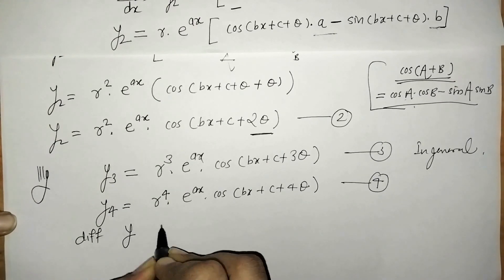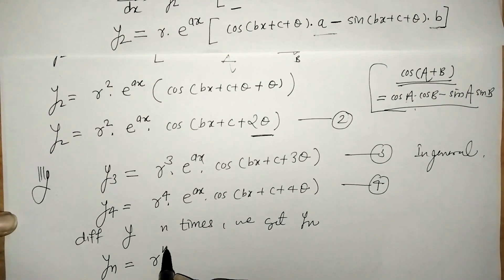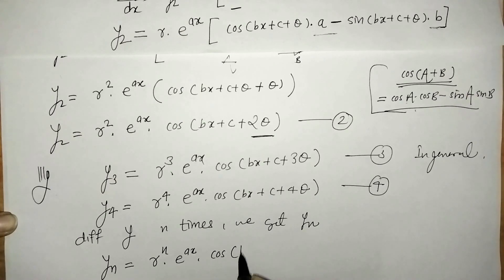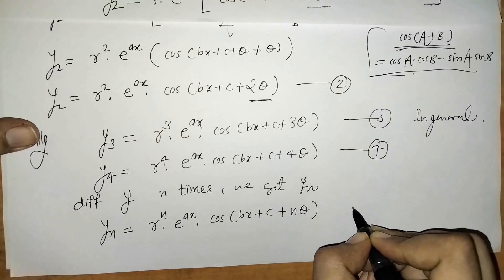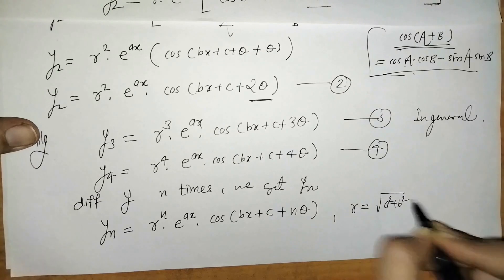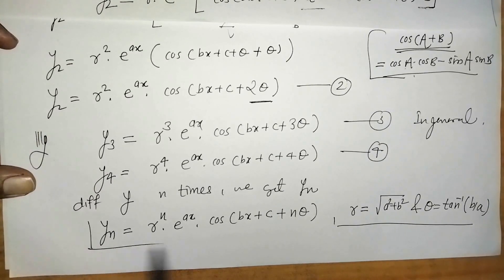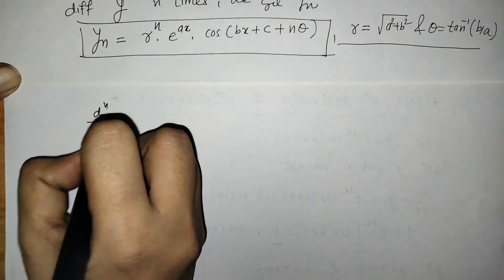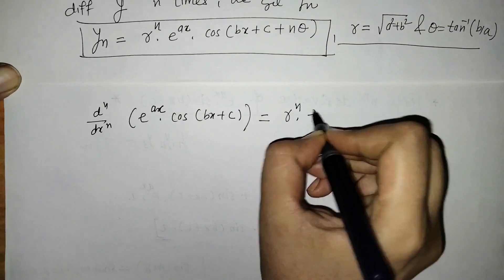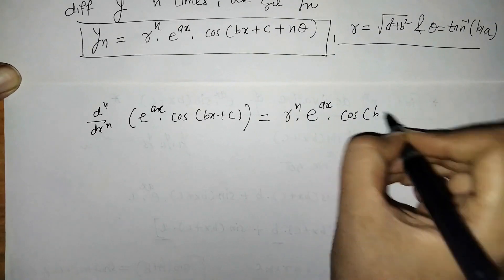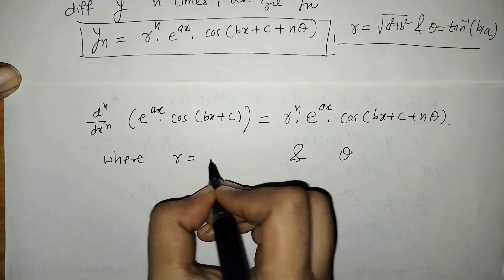Differentiating n times we get yn. So yn is r raised to n into e raised to ax into cos of bx plus c plus n theta, where r equals root of a squared plus b squared and theta equals tan inverse of b by a. So we have found the nth derivative of e raised to ax into cos of bx plus c, and it is given by r raised to n times e raised to ax times cos of bx plus c plus n theta.